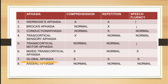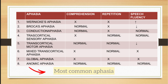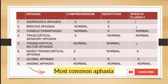In global aphasia, all three important components of speech will be lost. In anomic aphasia, all three components remain normal, and only the naming capacity of the patient is impaired. Out of all these, anomic aphasia is the most common and is usually seen with any kind of metabolic encephalopathy. Thank you.